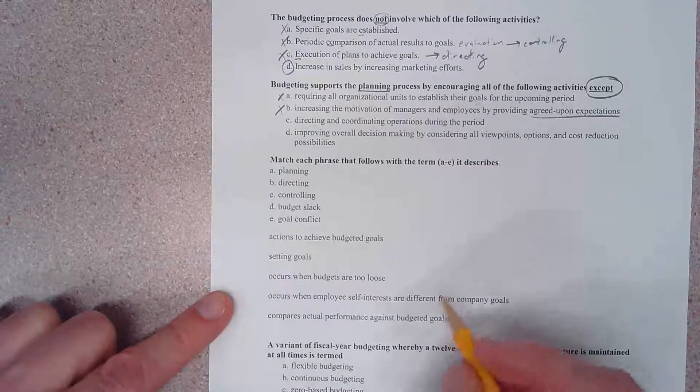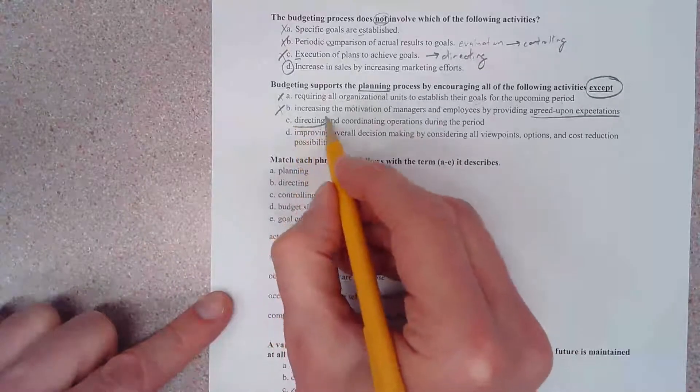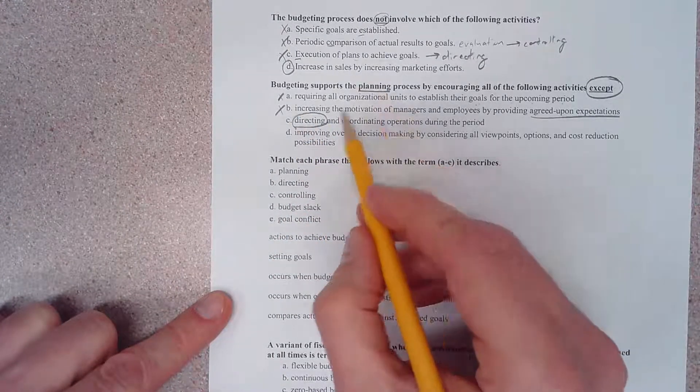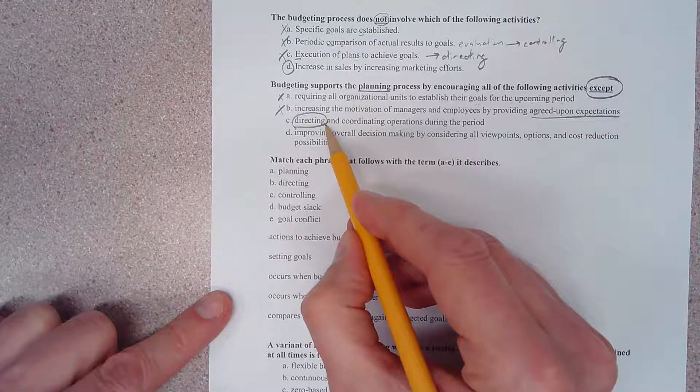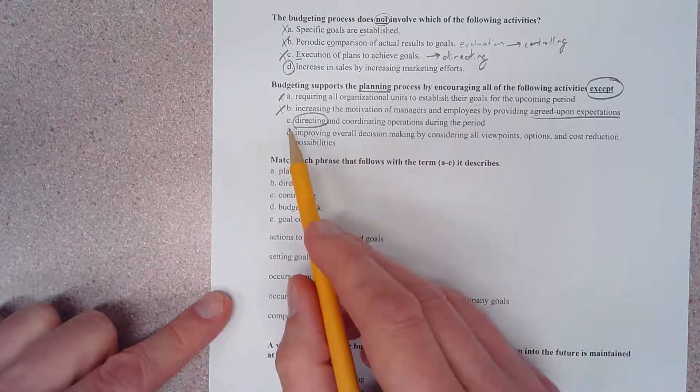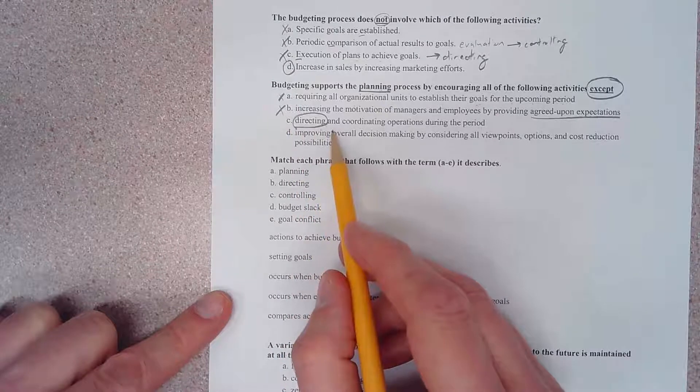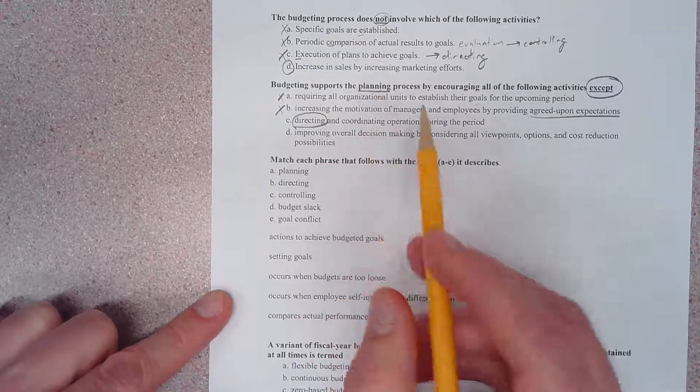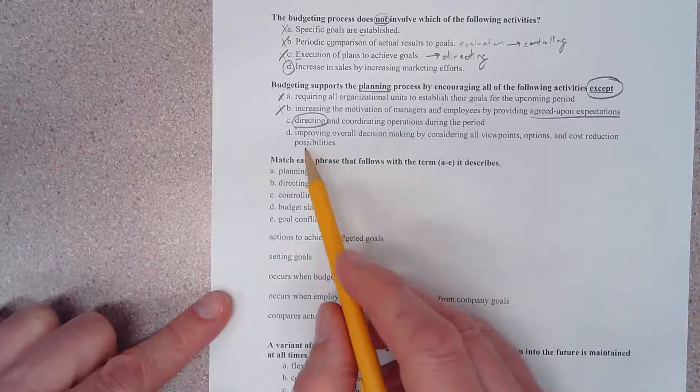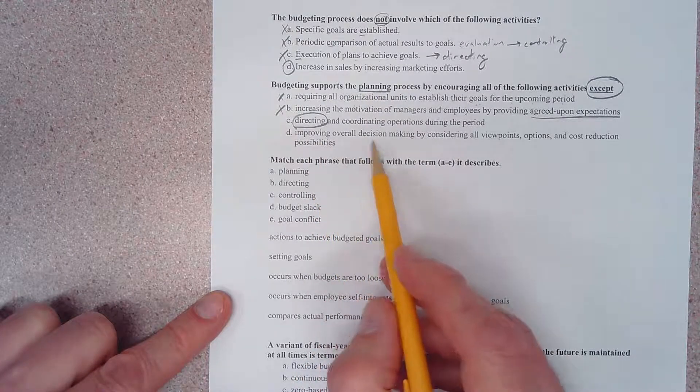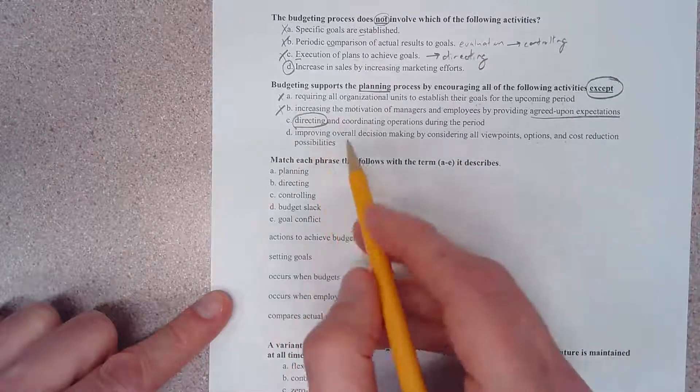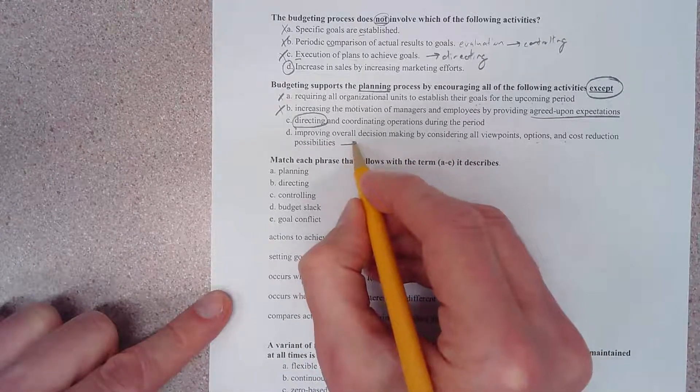Let's see here. Directing and coordinating operations during the period. Well, our keyword is right here - directing. We have a planning process, we have a directing process. Choice C appears to be the correct answer in that it is not a part of the planning process. Let's look at D just to make sure.